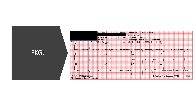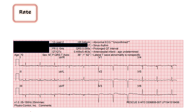Here's what it looks like. We do this the same way every time. We start with our rate. The computer is telling us we've got a rate of 64. I'm going to find a QRS complex that matches up with a thick red line and then march that out: 300, 150, 100, 70, 60. It's between 60 and 70, right at 64. I agree with the computer.